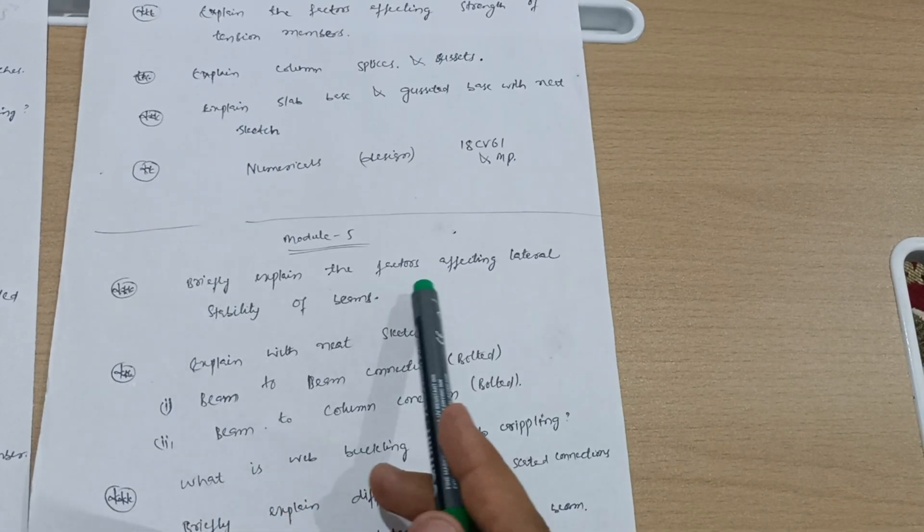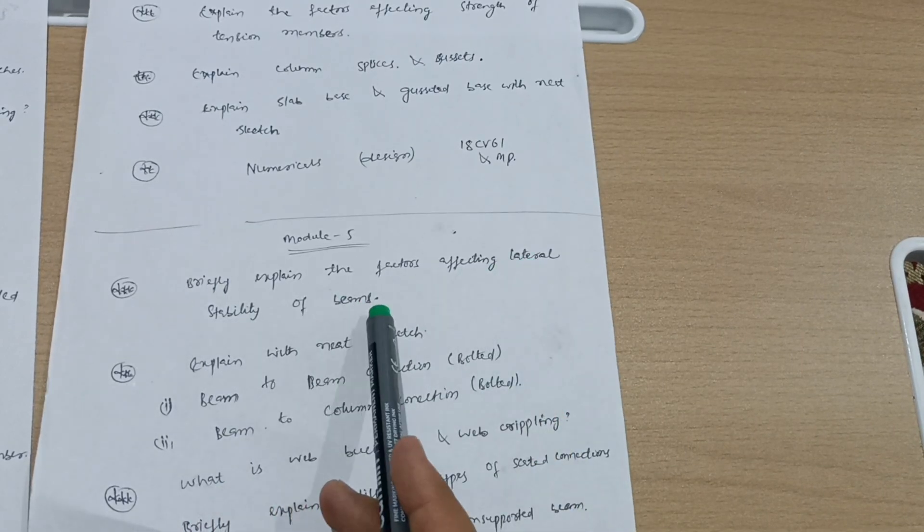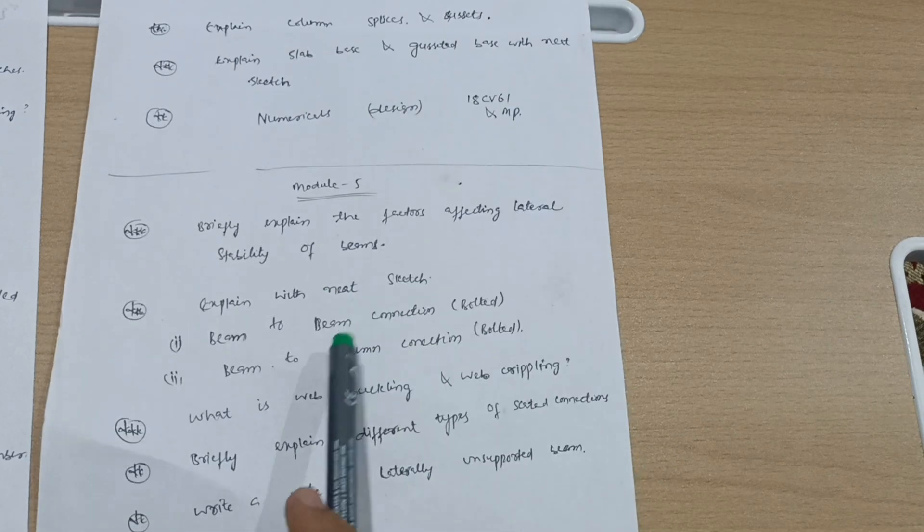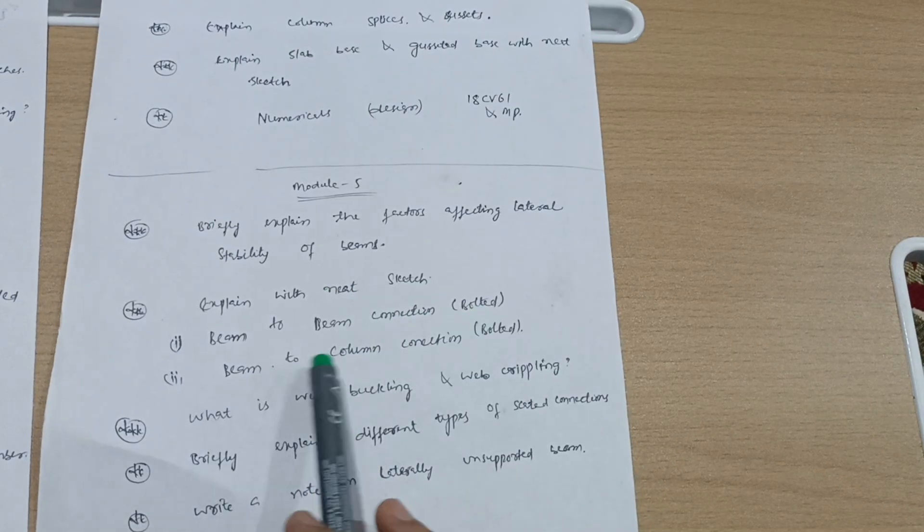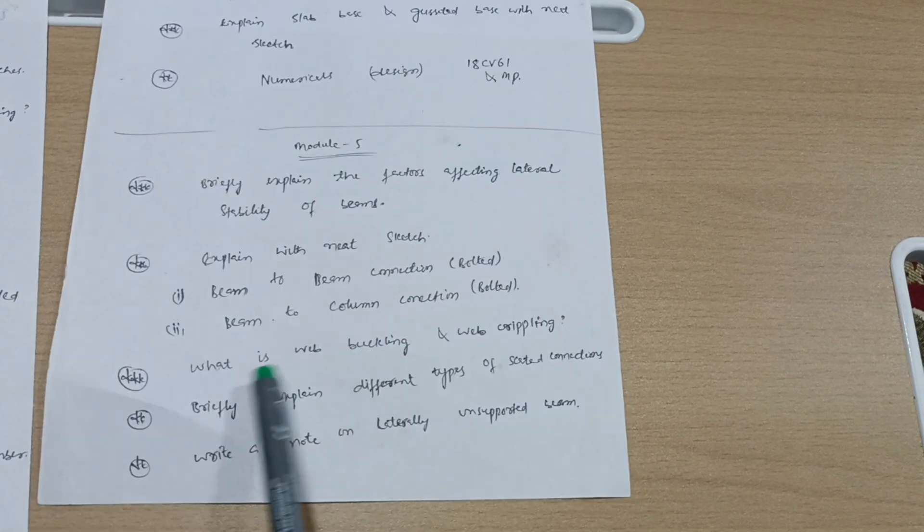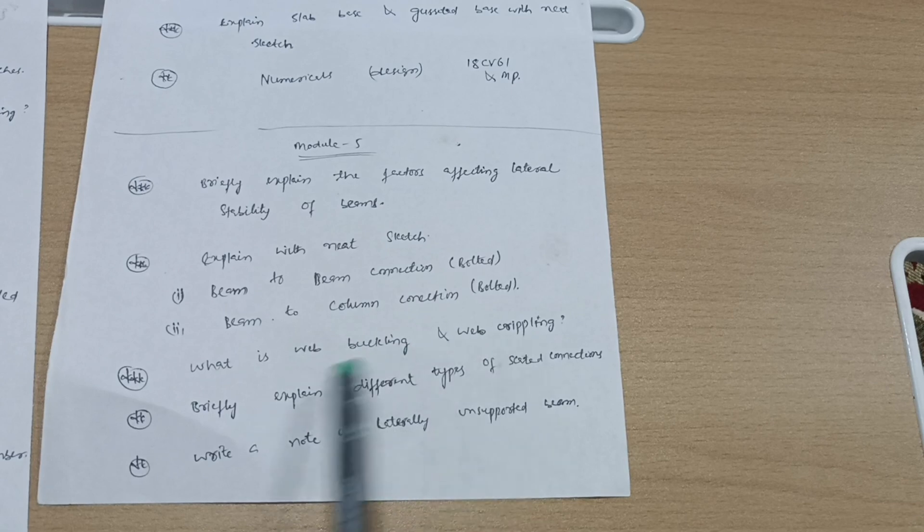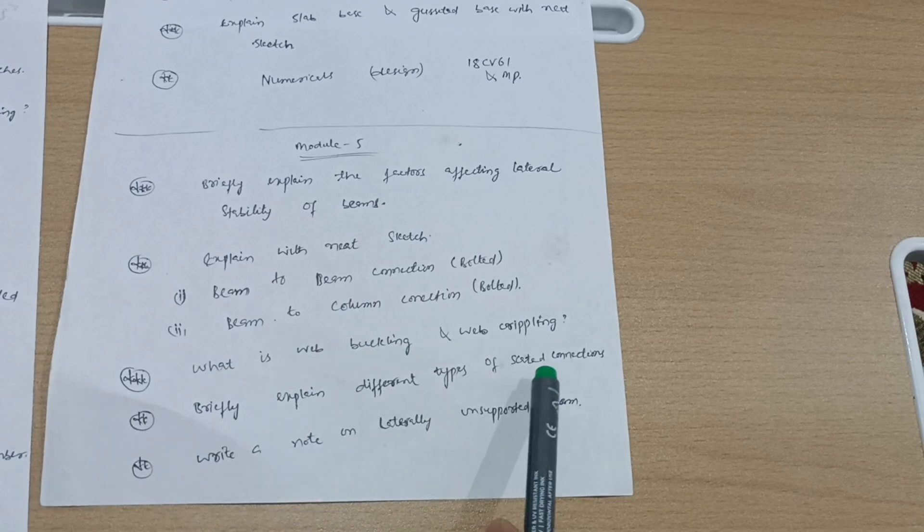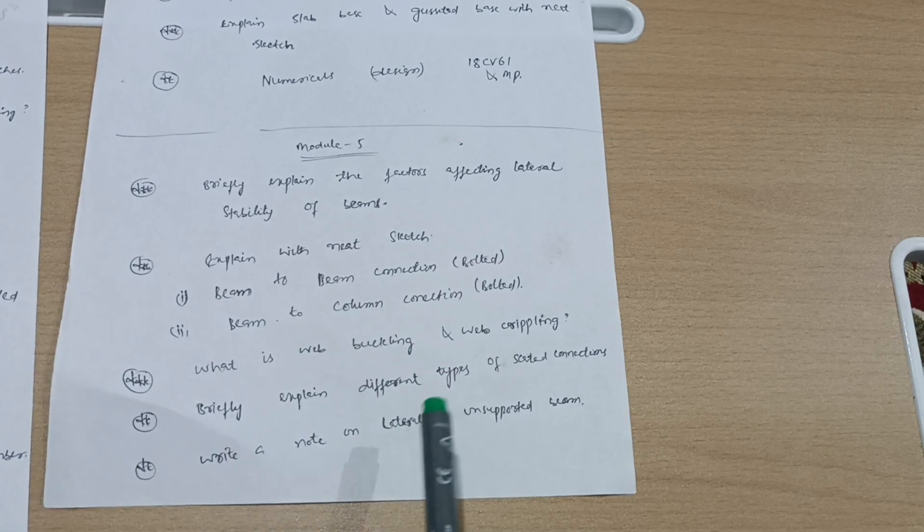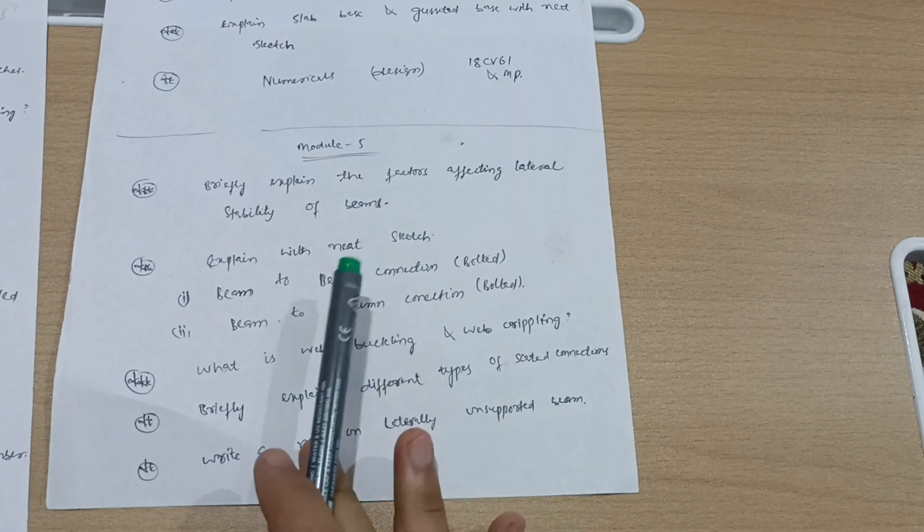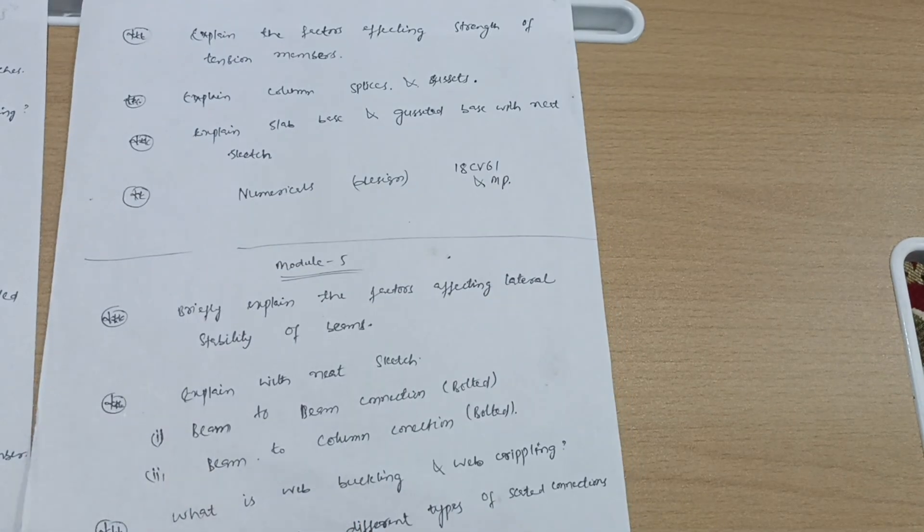Last module is Module 5: Briefly explain the factors affecting lateral stability of beams. Explain with neat sketch beam to beam connection bolted and beam to column connection bolted. What is web buckling and web crippling? Briefly explain different types of seated connections. Write a note on laterally unsupported beam.